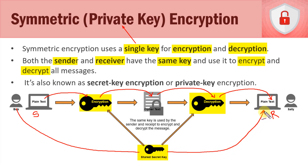There's something we didn't talk about: how does Bob get the key over to Sally? That's an issue with secret key or private key encryption. Within a small organization it's not an issue, but if people are across the country or across the world, that's where asymmetric encryption comes into play.